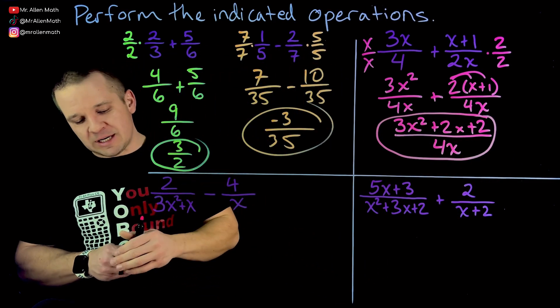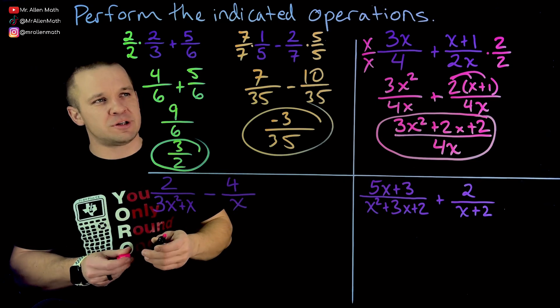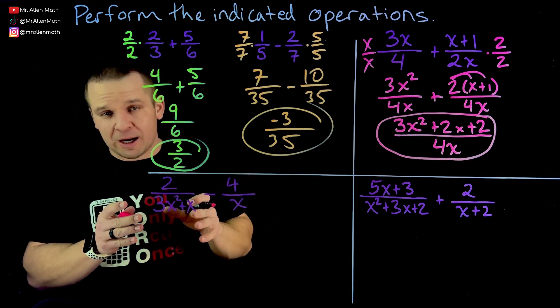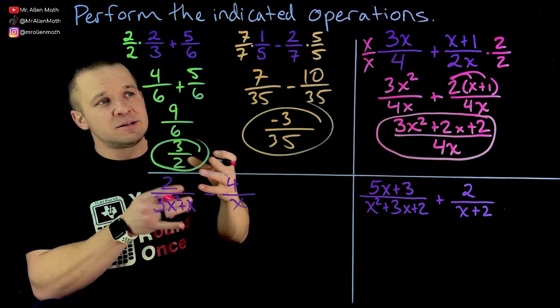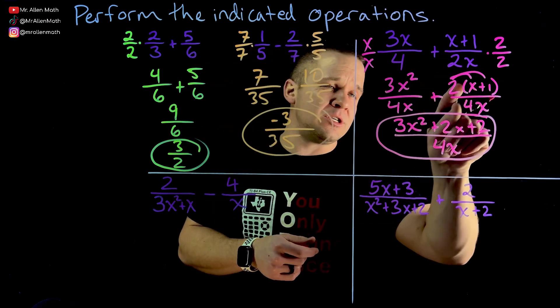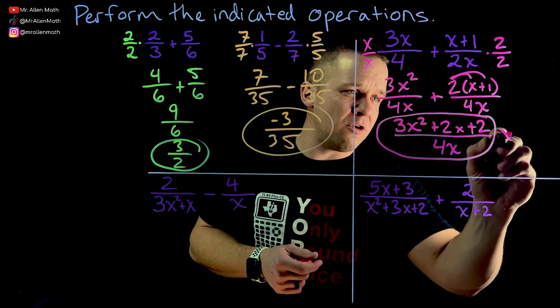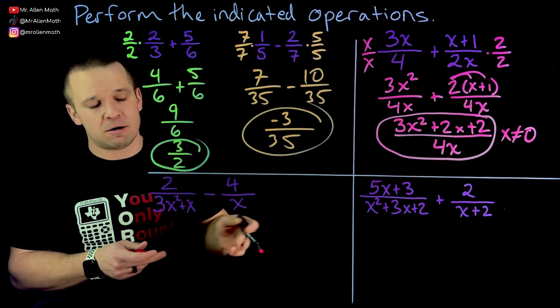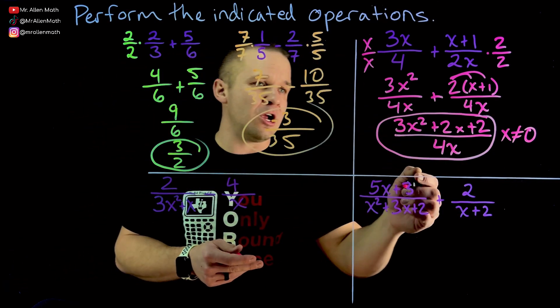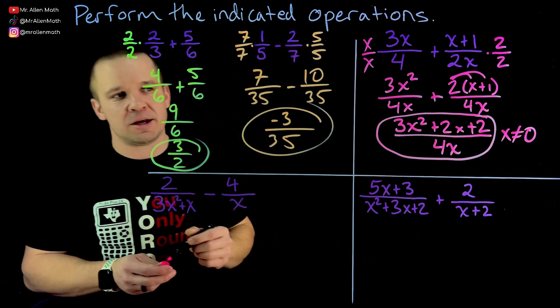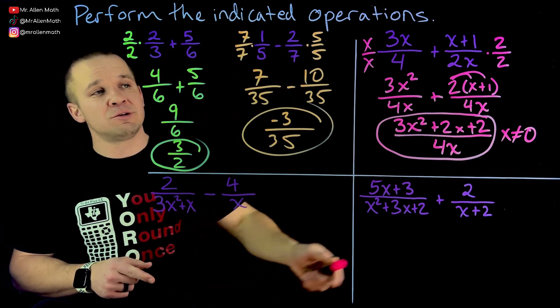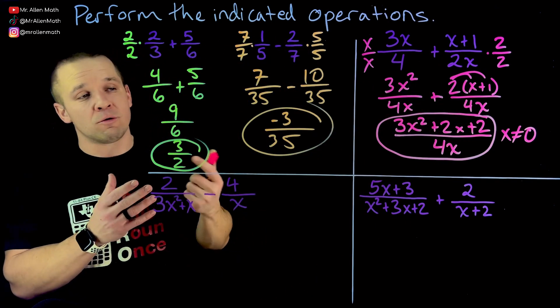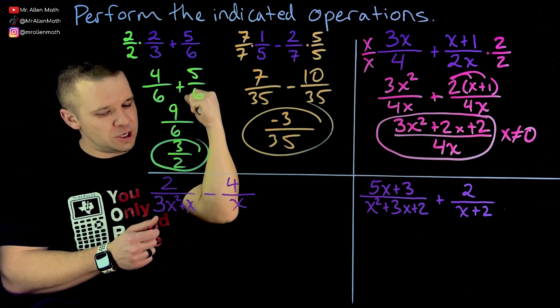Now I know some texts will ask you for like domain restrictions with these. And that goes to be like, hey, I can't divide by zero. So what X values would make me divide by zero here? Well, that would just be zero. So if your teacher asks you, hey, I want domain restrictions, you can also say where X does not equal zero. Cool. I didn't ask that here, but if they do ask for it, X cannot equal zero needs to be specified there because it would make this guy undefined in the original. All right. Dope.